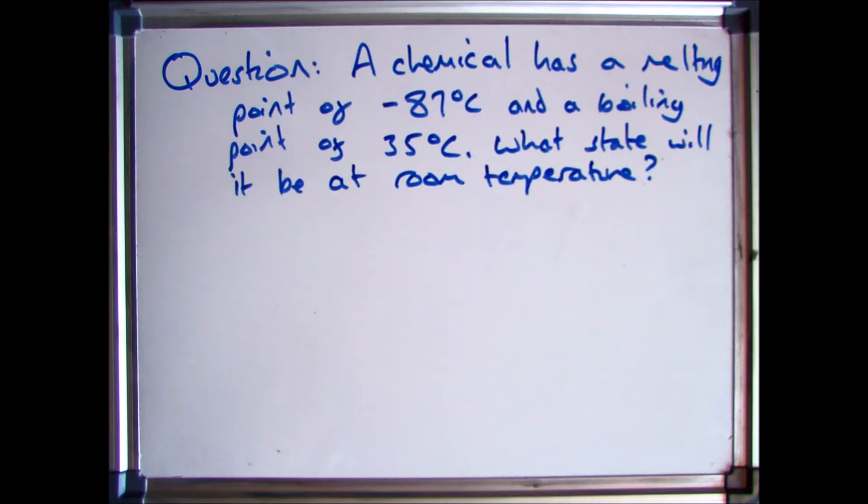So if you have a question like this in the exam, a chemical has a melting point of minus 87 degrees and a boiling point of 35 degrees, what state will it be at room temperature?